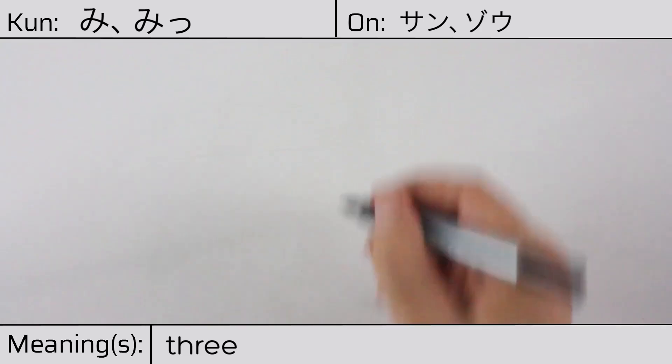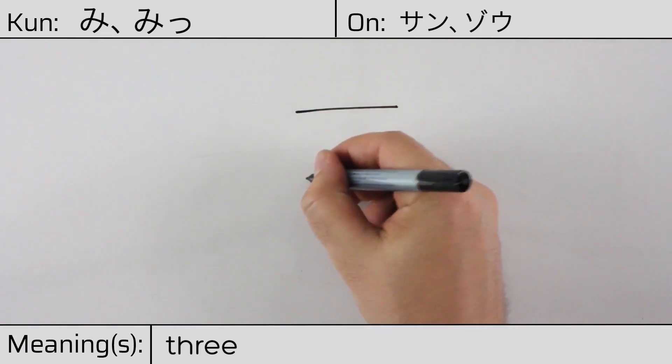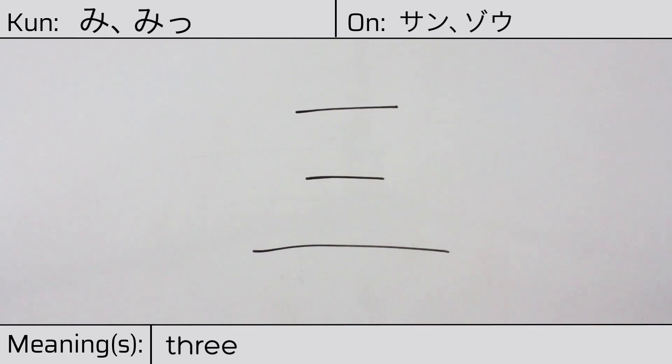This kanji has kunyomi or Japanese readings of mi, and it has onyomi or Chinese readings of san or zou. This character has the meaning three. Here is the stroke order: ichi, ni, san.